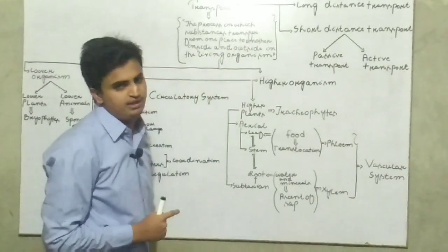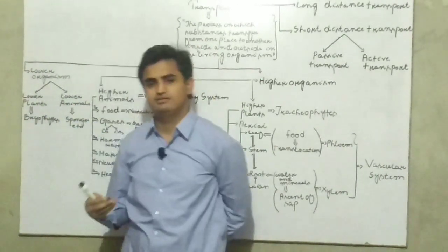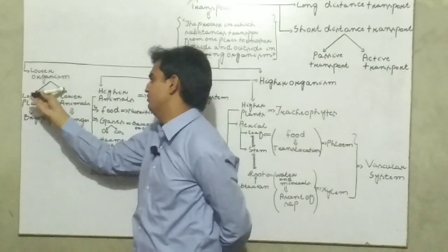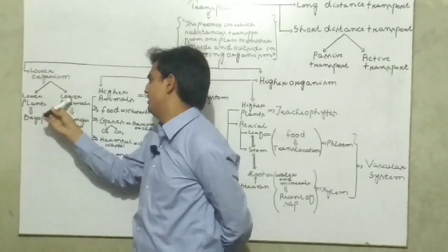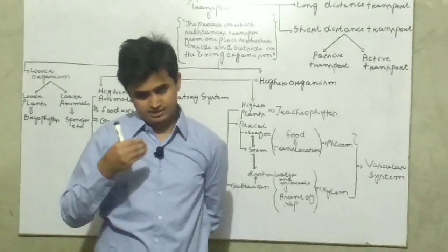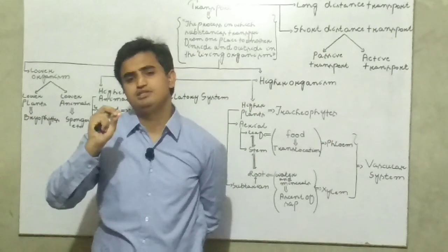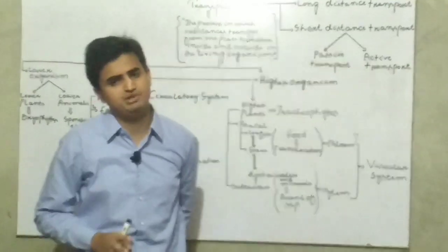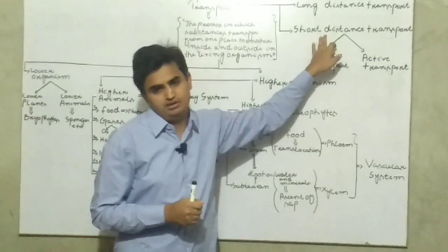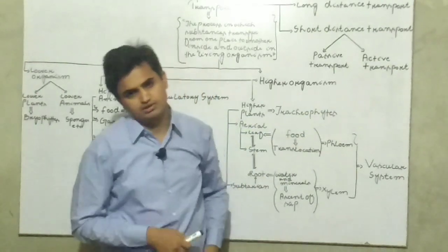اس کے علاوہ lower organisms وہ ہوتے ہیں جن کی body different parts پر مشتمل نہیں ہوتی — یا تو body parts same ہوں یا body ایک cell پر مشتمل ہو۔ Lower plants جیسے bryophytes اور lower animals جیسے sponges — ان میں long distance transport absent ہوتی ہے کیونکہ cell to cell transport ہوتی ہے۔ اس میں بھی short distance transport ہوتی ہے — concentration کی بنیاد پر passive transport یا energy کی بنیاد پر active transport۔ شکریہ۔